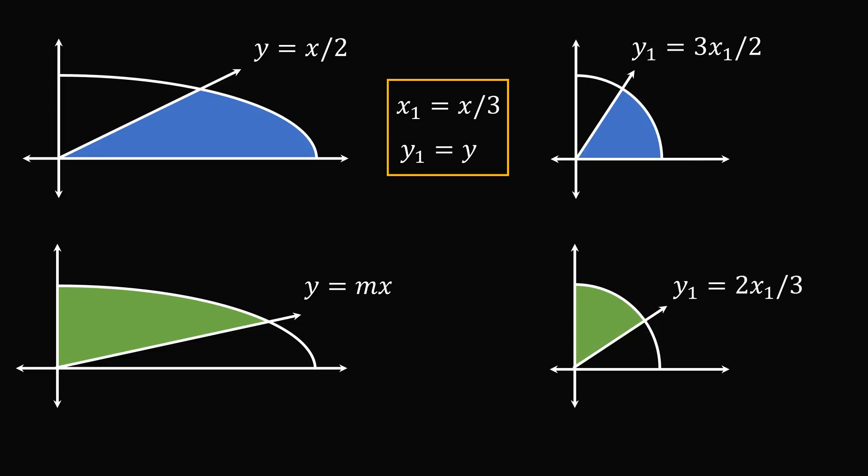Now all we have to do is transform it back into our original coordinates. So we will do a change of coordinates back. We will now do the reverse transformation that x equals 3x1 and y equals y1. Upon this transformation, we get the line y equals 2x divided by 9.